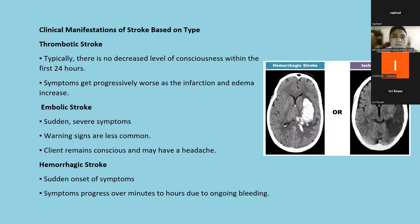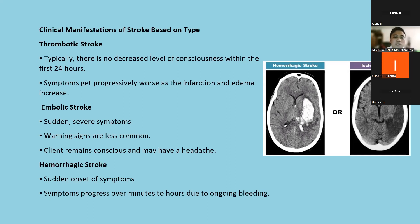For clinical manifestation, there are three common types of stroke: thrombotic, embolic, and hemorrhagic. In thrombotic stroke, there is typically no decreased level of consciousness within the first 24 hours, and symptoms get progressively worse as infarction and edema increase. In embolic stroke, there are sudden severe symptoms; warning signs are less common and the client remains conscious and may have a headache. In hemorrhagic stroke, there is sudden onset of symptoms that progress over minutes or hours due to ongoing bleeding.